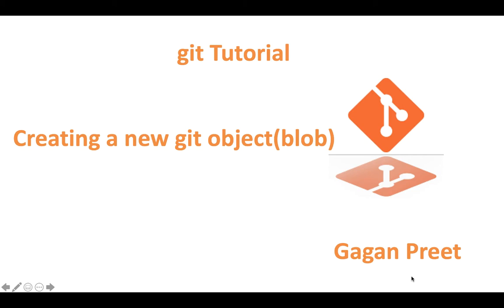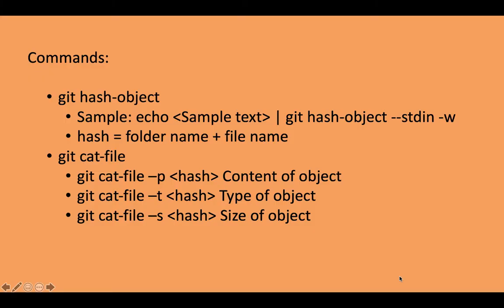We'll see how exactly a blob is created and how exactly we can view this particular object. The commands we'll use are: git hash-object to create a blob object, and git cat-file to view the blob object content.